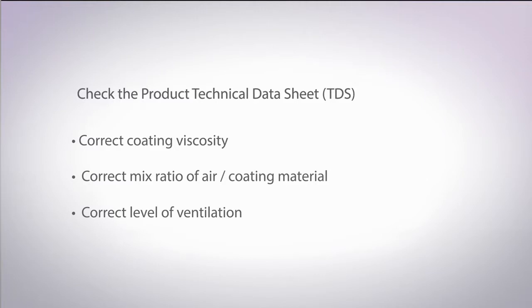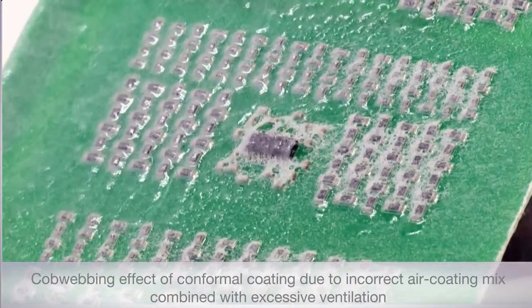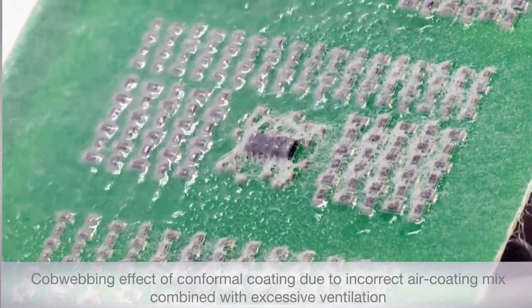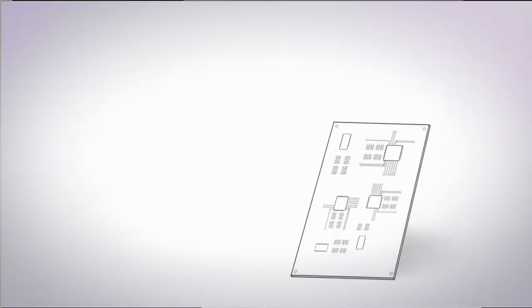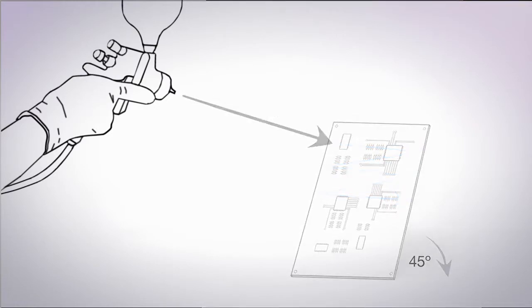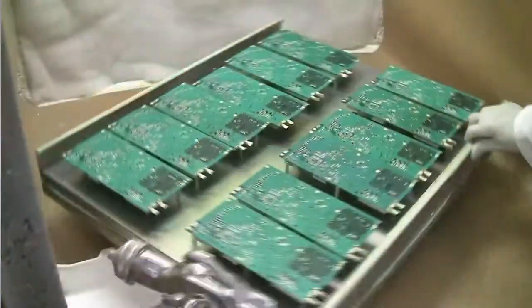Incorrect ventilation or the wrong mix of air and material ratio on the gun can cause problems such as cobwebbing or blooming. Once the correct air material mix is achieved, the method for application is much the same as with aerosols. A 45 degree angle from the board, 20 to 30 centimetres distance and a steady Z motion. Turning the board after each complete pass and repeating the process until it has rotated 360 degrees.